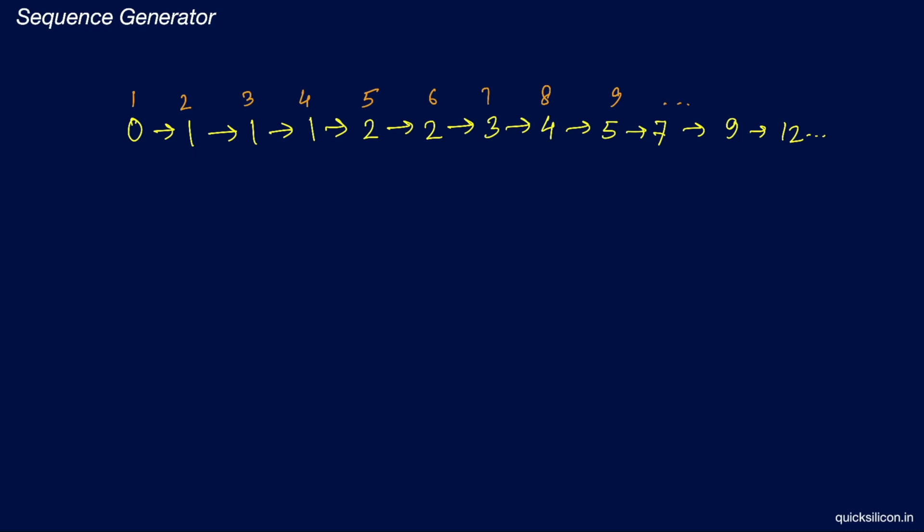Those zeros and ones are a probable hint that these values may be derived from the reset values of certain flops — let's hold on to that information for later. From cycle 5 onwards the sequence is 2, followed by 2, 3, 4, 5, and so on. Since this is an increasing sequence, it is a hint that the next number is formed by some sort of addition of the already generated numbers. Let's try to come up with a pattern to form the next number using past generated numbers.